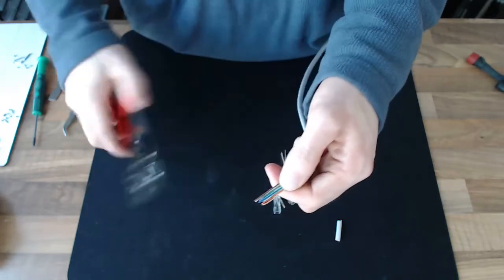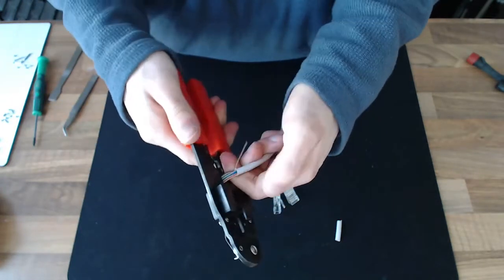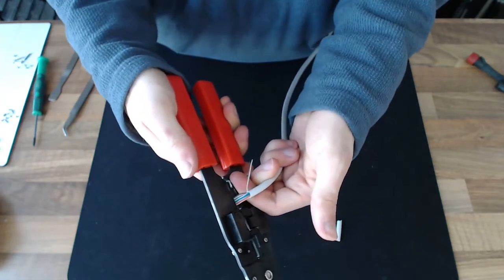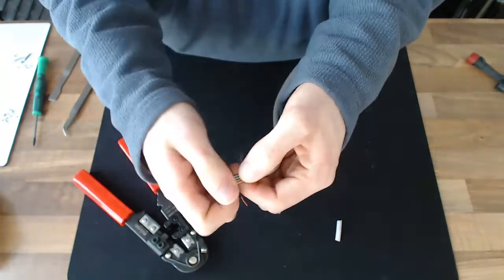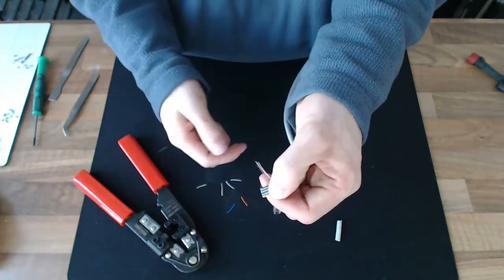And then, once it's nice and straight, you want to cut it back to about half an inch, like so. And that gives us a nice flat ribbon with a flat end.